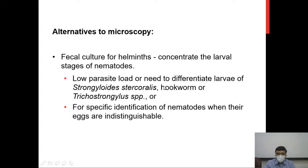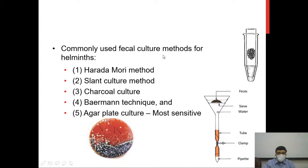For example, the eggs of the two different hookworms — Ancylostoma duodenale and Necator americanus — are very similar and cannot be differentiated by microscopy. However, using fecal culture, the eggs hatch and the released larvae have different morphological features between Ancylostoma and Necator, allowing differentiation.